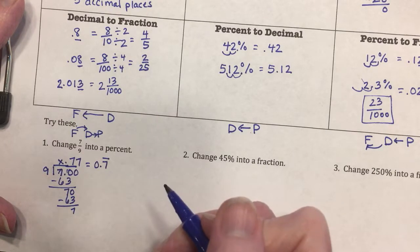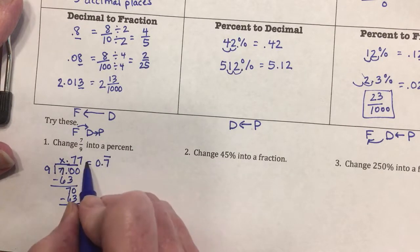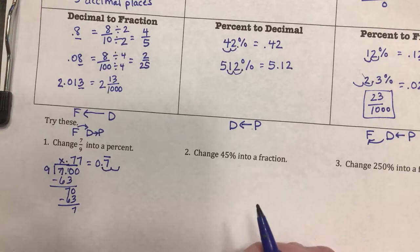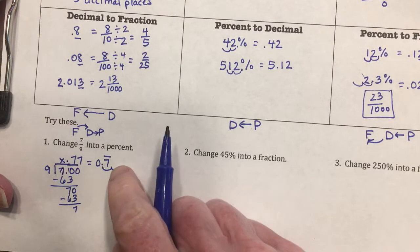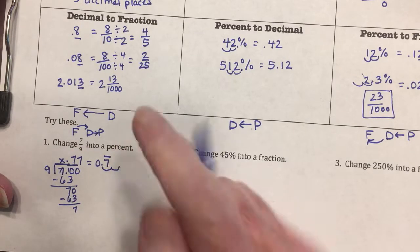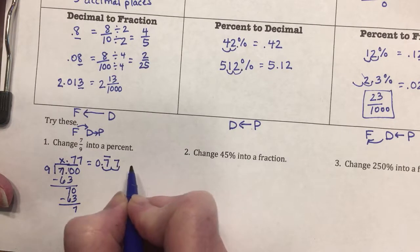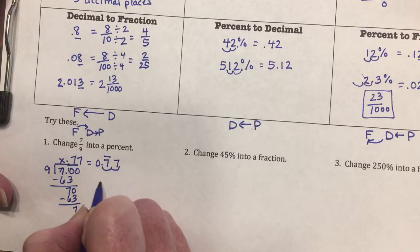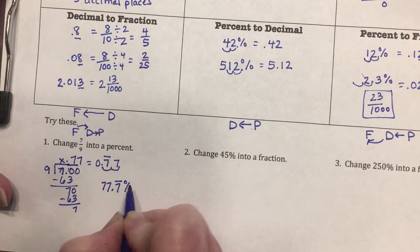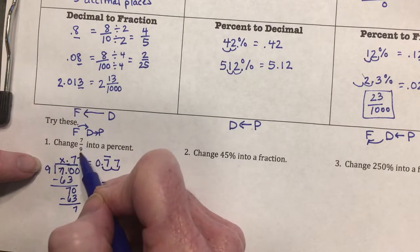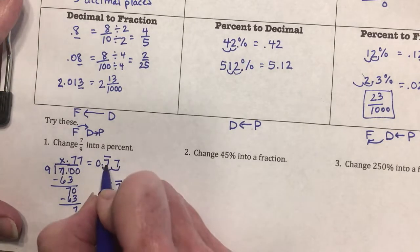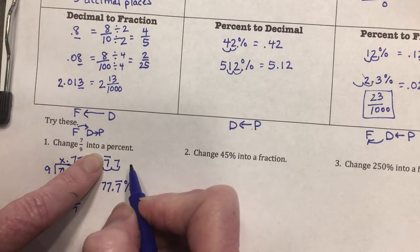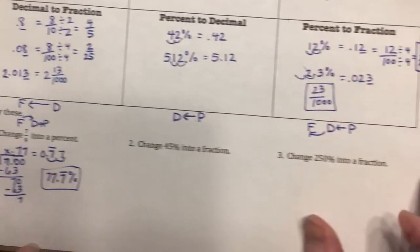The result is 0.7 repeating — written with a bar over the 7. To change this repeating decimal to a percent, I move two places to the right. The digit that continues isn't a zero — the bar means 7 is repeating, so a 7 goes in that place, and I show it's still repeating. This gives 77.7 repeating percent. So 7/9 = 77.7̄%.